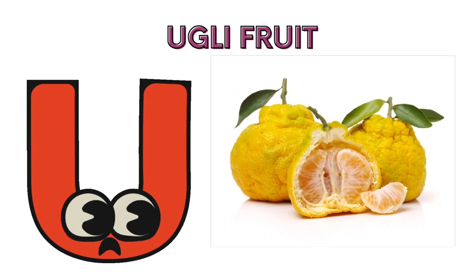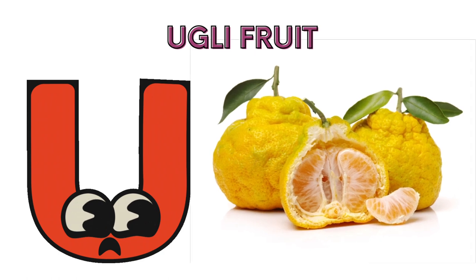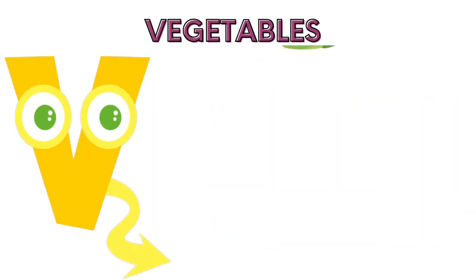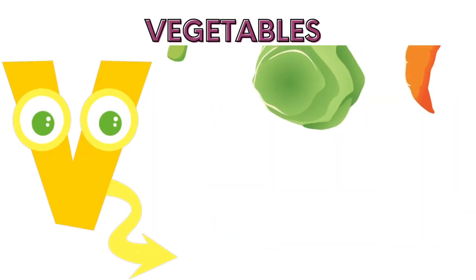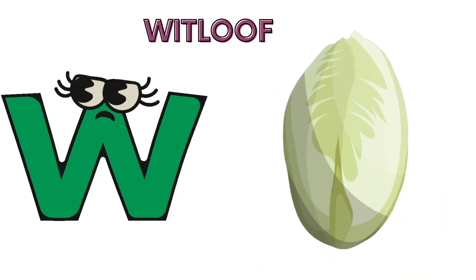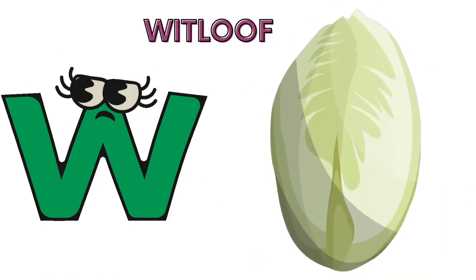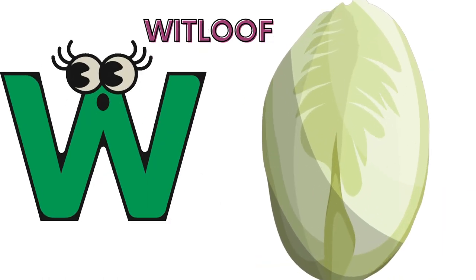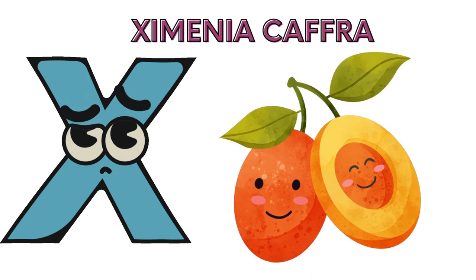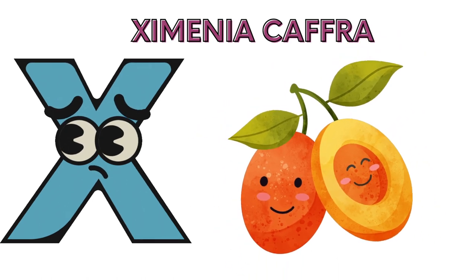U is for ugly fruit, ugly fruit. V is for vegetables, vegetables. W is for white loaf, white loaf. X is for ximenia, ximenia.